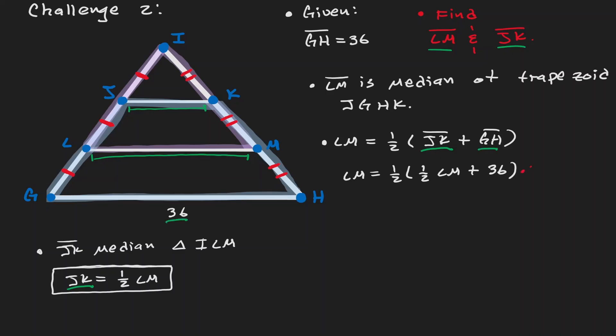Let's continue by multiplying by 2. And let's subtract one half of LM. Now 2 minus one half is the same as saying 2 minus 0.5, which is going to give us 1.5. Let's divide it by 1.5.